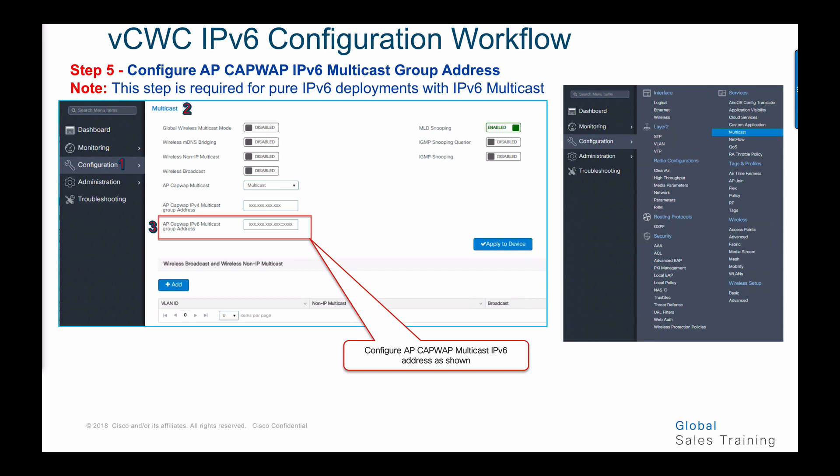Step number five shows how to configure the CAPWAP IPv6 multicast group address. Go to the global menu, choose multicast, then configuration, choose the multicast tab, then select AP CAPWAP IPv6 multicast group address, and configure the AP CAPWAP multicast IPv6 address as shown.